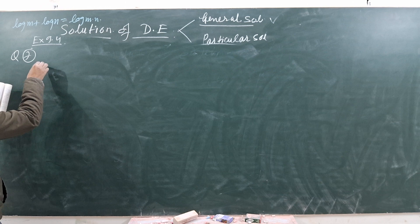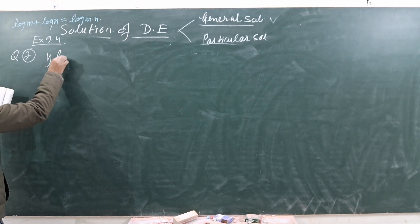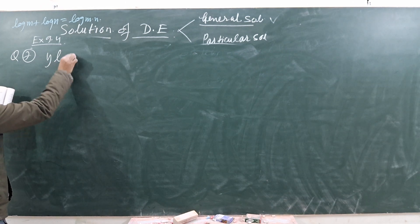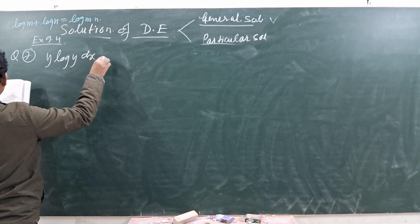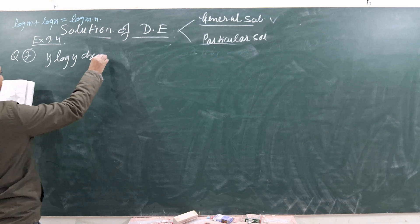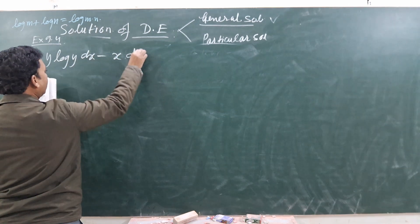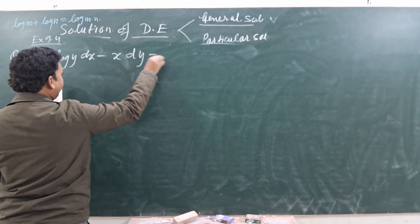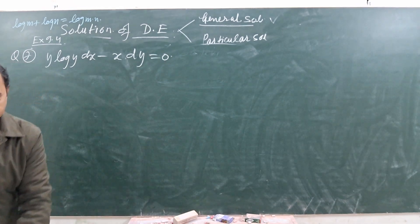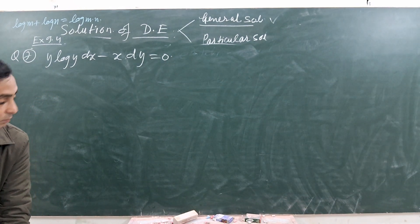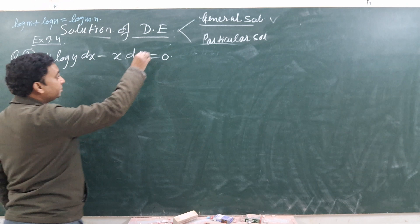Question number 7: y log y dx minus x dy equals to 0. We will solve this using variable separation method.